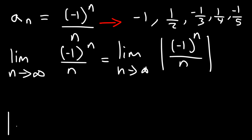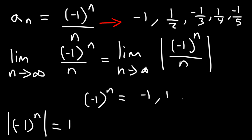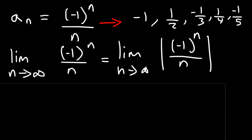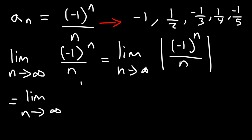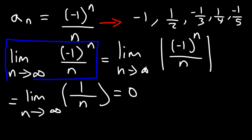The absolute value of (-1)^n is simply 1, because (-1)^n just oscillates between 1 and -1, so its absolute value is always 1. Therefore, we can simplify the expression to the limit as n approaches infinity of 1/n, which equals 0. Since the limit of the absolute value of the expression is 0, the original limit is also 0 by the absolute value theorem.